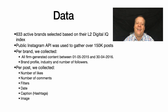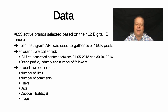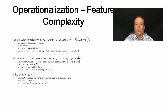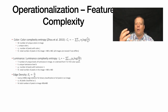We looked at the brand profile, industry, and number of followers. Per post, we looked at the number of likes, number of comments, whether any filters were applied, the date posted, the captions, and of course the actual image itself. We operationalized this by looking at feature complexity measures — color complexity entropy, luminance complexity entropy, and edge density.